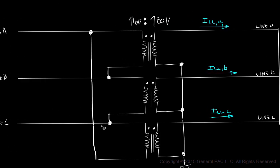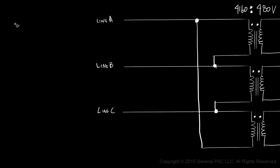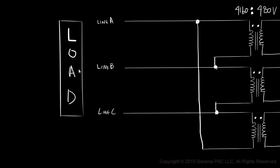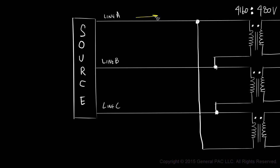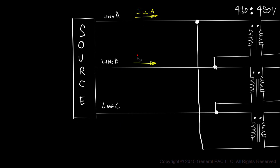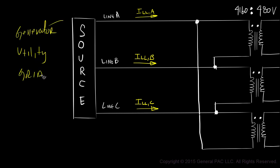Our transformer is connected in delta on the primary side, or the source side. So this is where our source current will come from. Line-to-line current A will flow through line A. Similarly, line-to-line current B will flow through line B, and line-to-line current C will flow through line C respectively. Remember, this line-to-line current comes from the source — like a generator, a utility, or the grid.